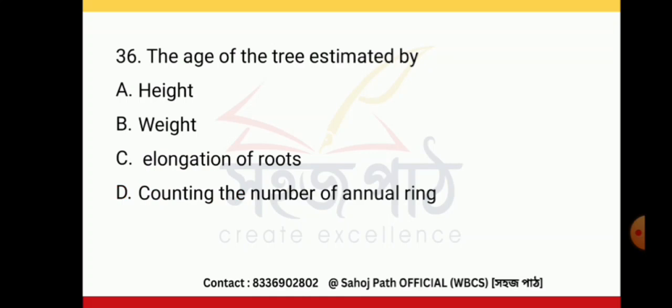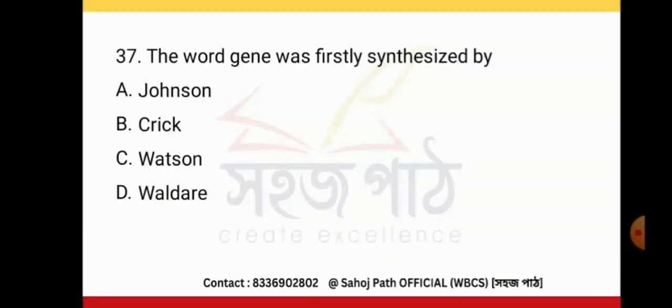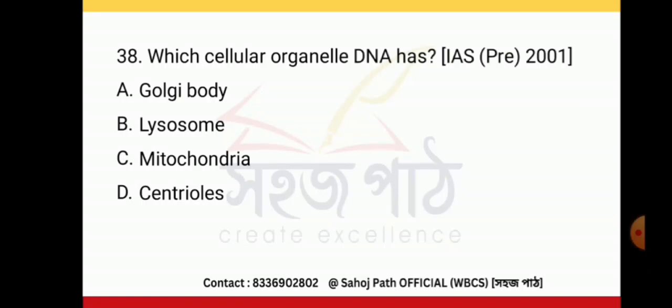The age of a tree is estimated by counting the number of annual rings. The word 'gene' was first coined by Johannsen.